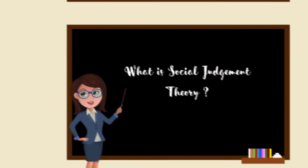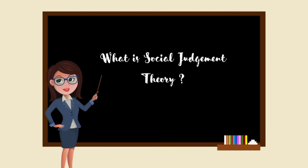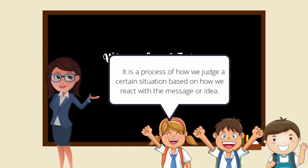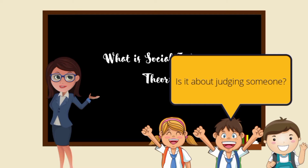What is Social Judgment Theory? It is a process of how we judge a certain situation based on how we react with a message or idea. Is it about judging someone? Well, it's not about judging someone. If you want to understand how this theory works, this presentation will help you to learn more about Social Judgment Theory.